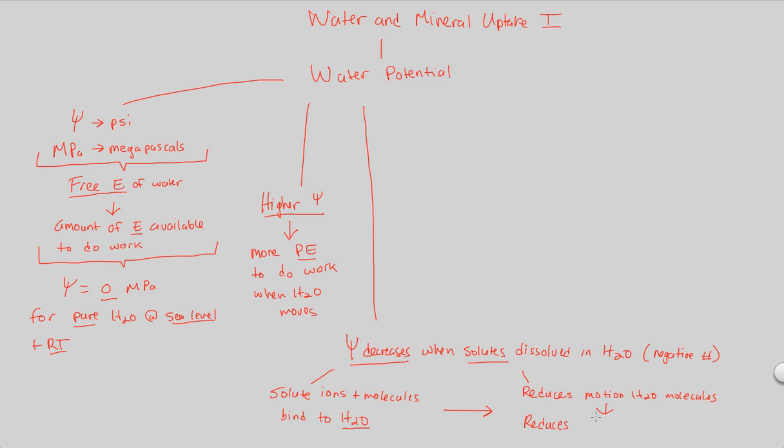So when you reduce the motion of H2O molecules, this directly reduces the capacity of those molecules to do work. And if you're reducing this capacity to do work, what are you doing? You're reducing water potential. Thus, psi, water potential, decreases because there are these solute ions blocking the movement of pure water because now water is associated with these solutes, minerals and ions, whatever they may be.